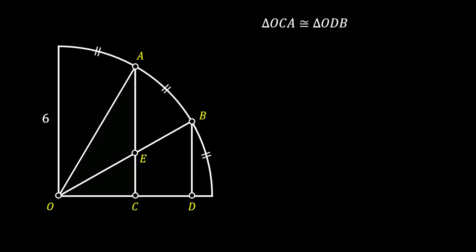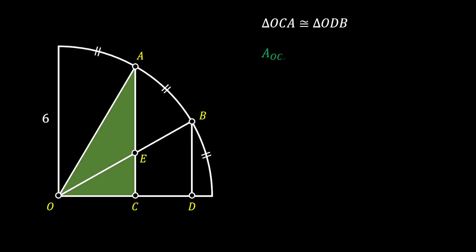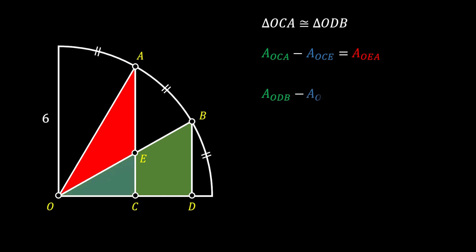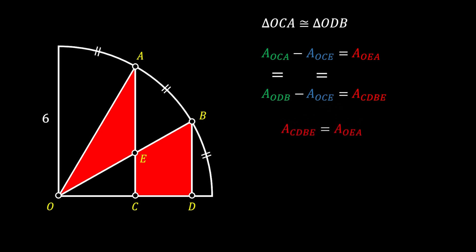Now let's look at triangle OCA. If we subtract the area of this triangle by the area of triangle OCE, we will get the area of red triangle OEA. Now if we take triangle ODB and subtract the same area of OCE, we will get the red shaded area of quadrilateral CDBE. Since triangles OCA and ODB are congruent, they have equal area. The area OCE is a common area for both equations, which leads us to conclude that area CDBE must be equal to area OEA. So those two red shaded areas are equal.